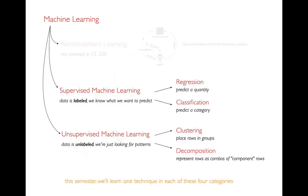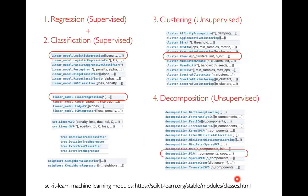That's a whirlwind tour of the four problems: regression and classification (both supervised/labeled), and clustering and decomposition (both unsupervised/unlabeled). For each there are tons of different algorithms. This semester we'll learn one for each: for clustering we'll learn k-means; for decomposition we'll learn PCA. The Scikit-learn website has close to hundreds of different algorithms.